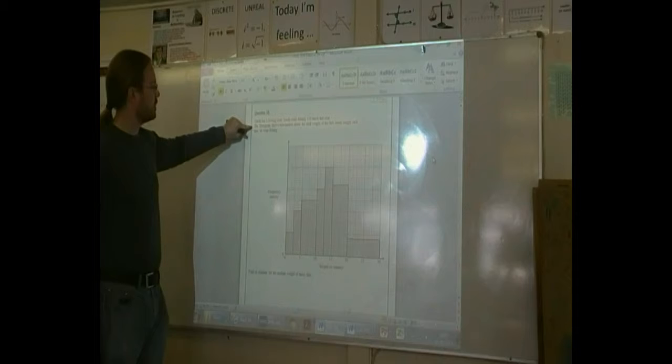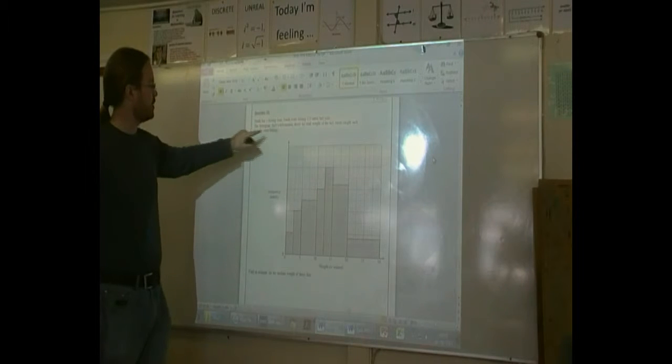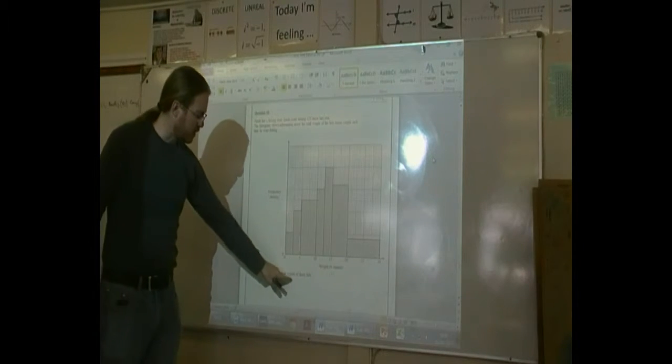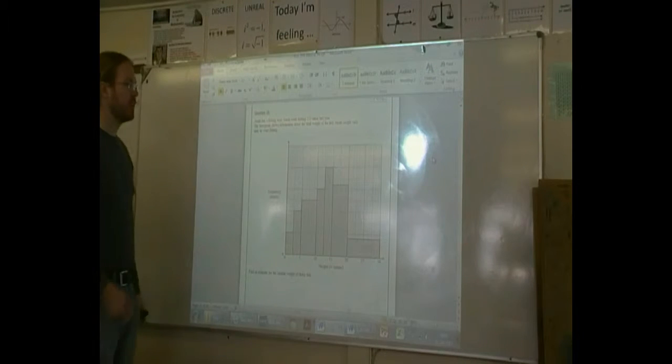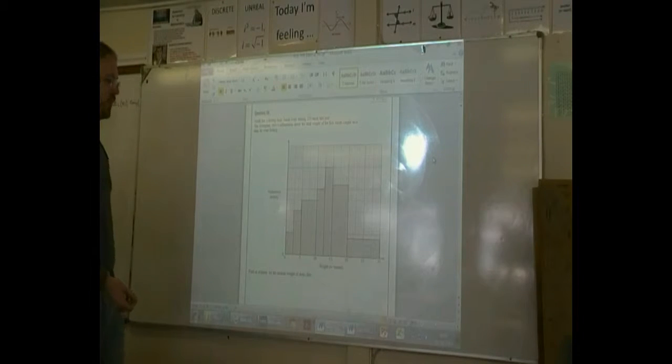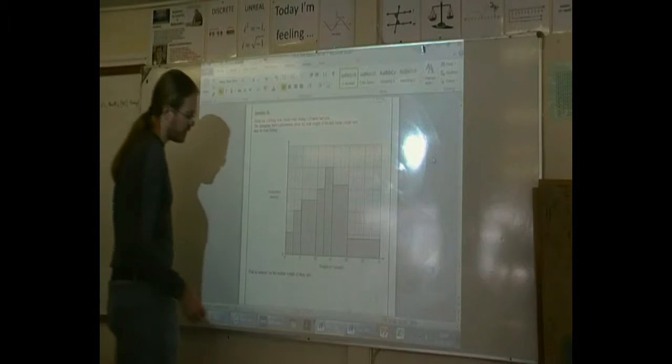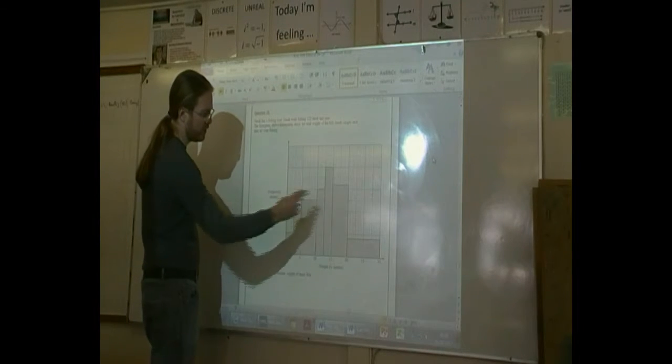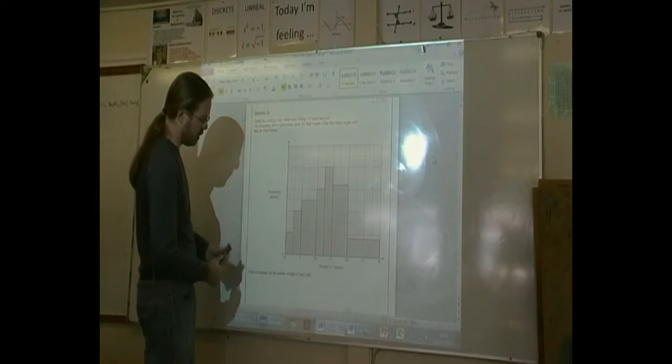The histogram shows the total weight of the fish Jonah caught each time he went fishing. Find an estimate for the median weight of the fish. So the median, the middle, that's what we need to work out, the middle weight of the fish. We need to work out where the middle is going to be. So the first thing is to find out the total area under this graph.